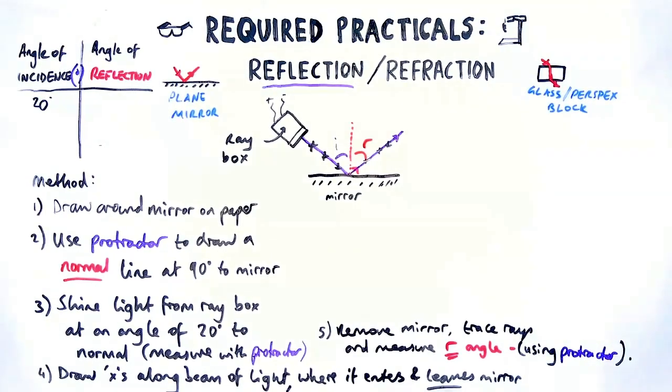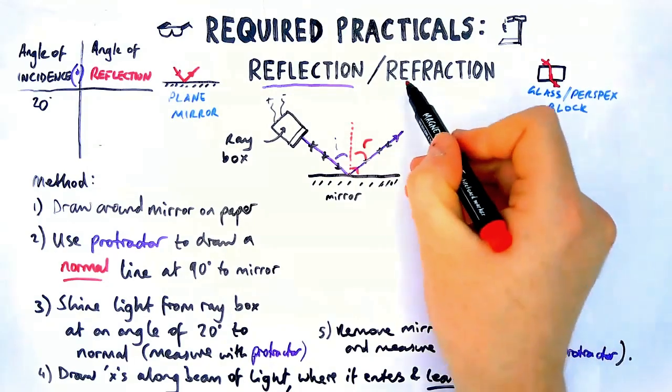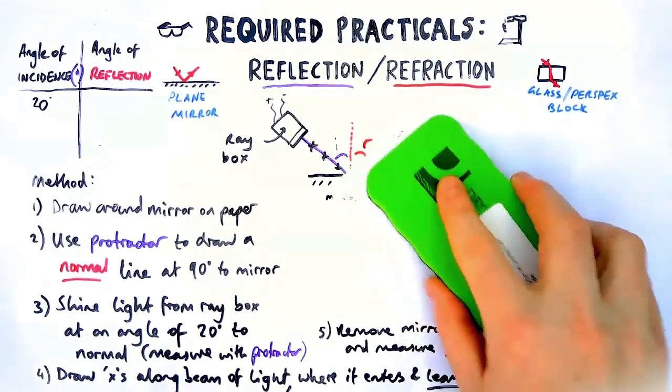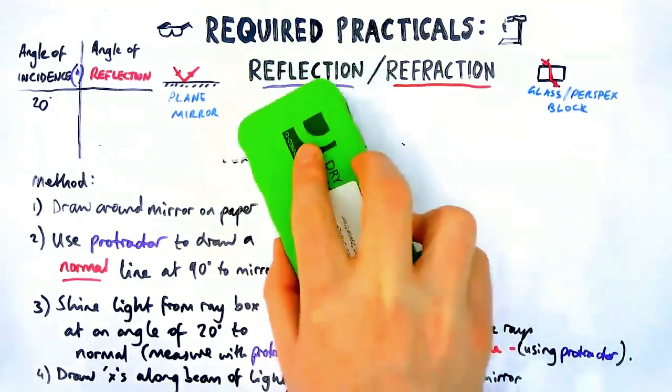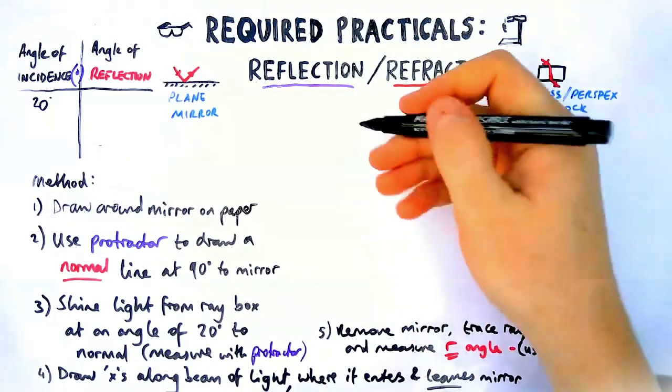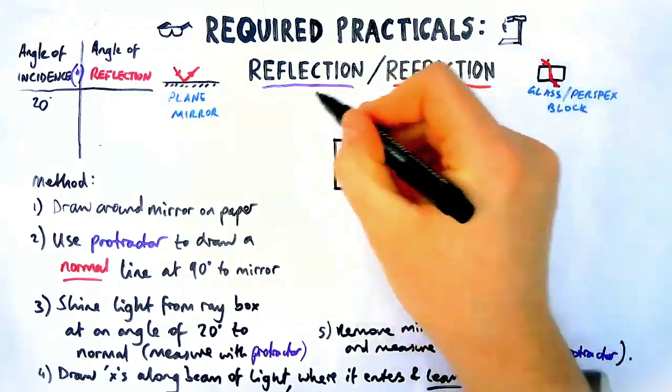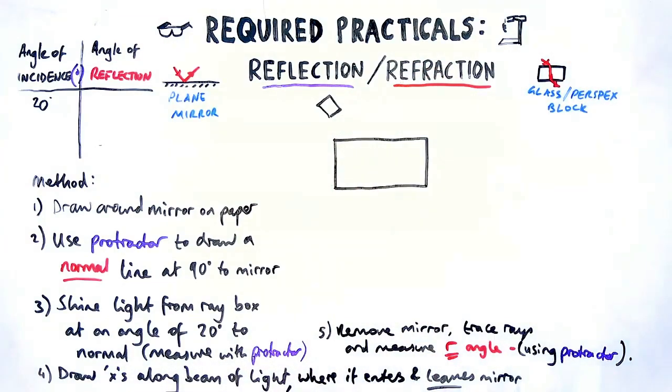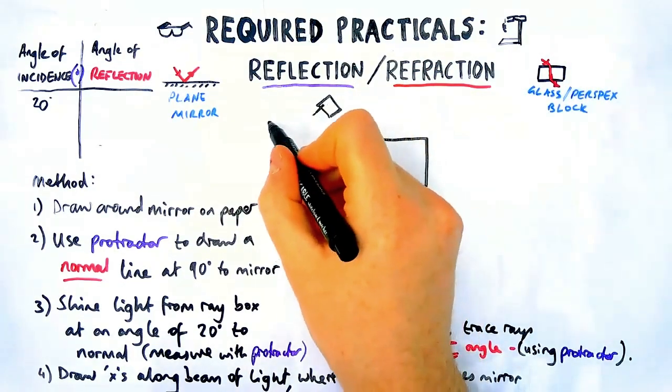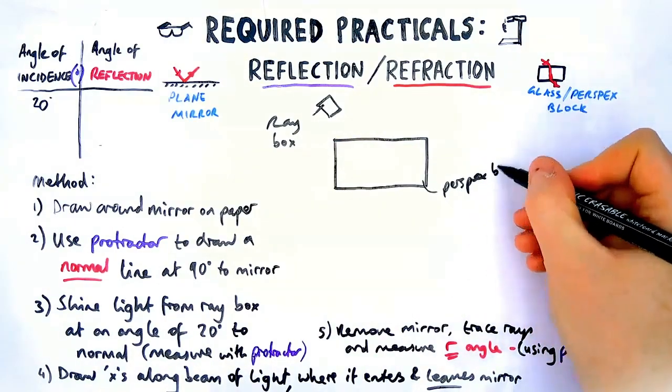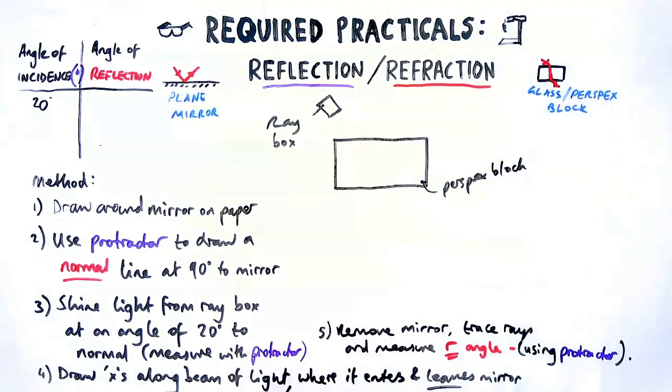Now the slightly more common version of this practical to come up is to do with refraction. Now all I'm going to do, and you can pause the video here with that method saved up, is I'm just going to edit this method just to bear in mind it's for refraction instead of reflection. So for refraction, instead of a mirror, we have got a glass block or a perspex block. We've still got a ray box that's shining light in. But this time we're going to see how it behaves when it goes through the perspex block or the glass block. So we're going to replace the word mirror with our perspex block on paper.